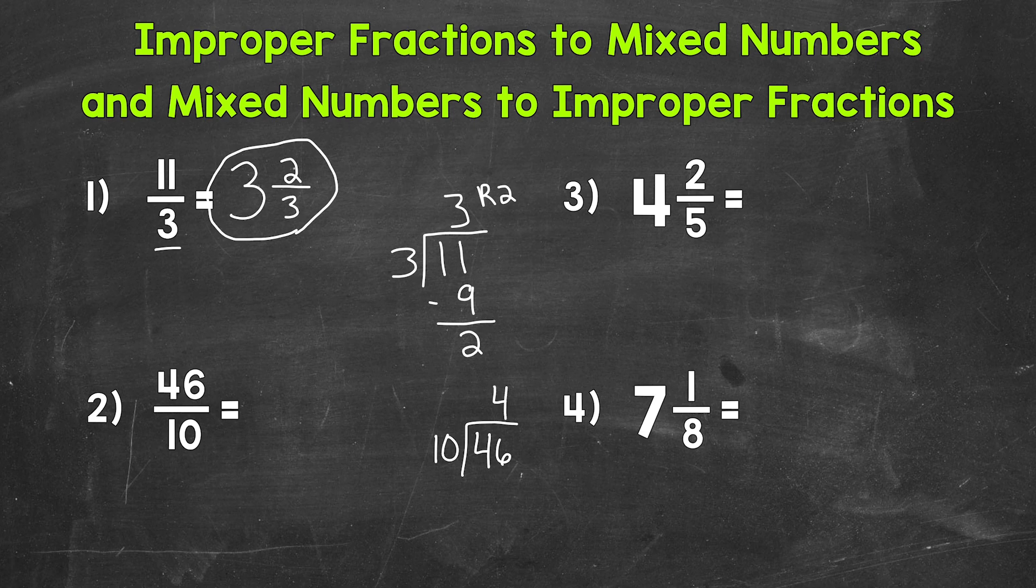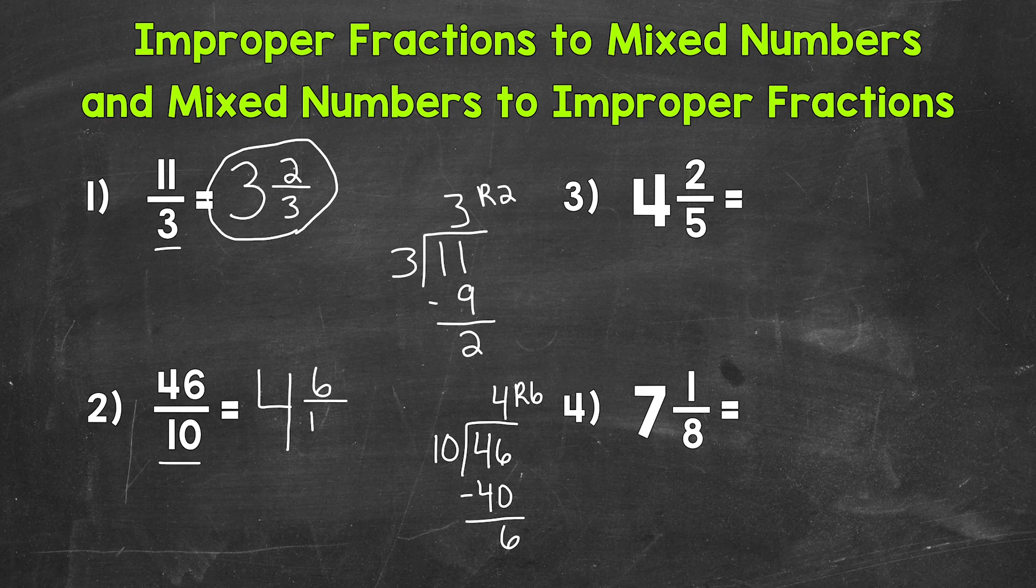4 whole groups of 10. So that's our whole number for our mixed number. Now we do not hit 46 exactly. We have a remainder, something left over. So 4 times 10 is 40. Let's subtract, and we get 6. So a remainder of 6. That remainder is our numerator. And we use our original denominator of 10 for our mixed number as well.